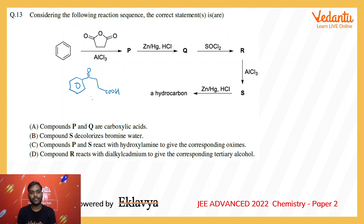P is reacting with zinc amalgam and HCl — that is Clemmensen reduction — which will reduce the carbonyl to an alkane. So Q would be the corresponding alkyl benzene product.